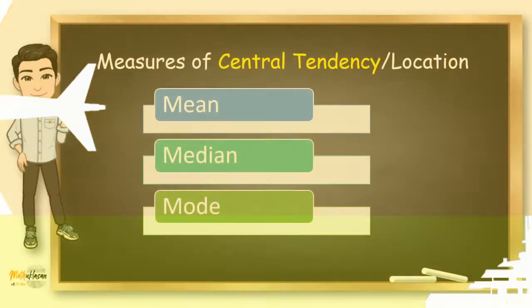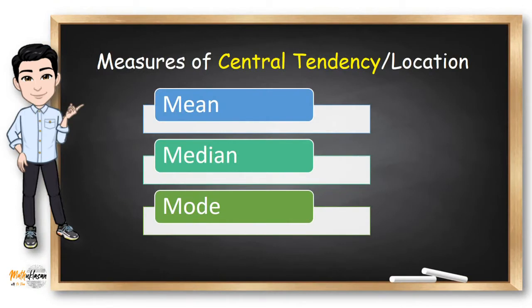Most sets of data show a distinct tendency to group around a central value. When people talk about an average value or the middle value or the most frequent value, they are talking informally about the three most common measures of central tendency: the mean, median, and the mode.